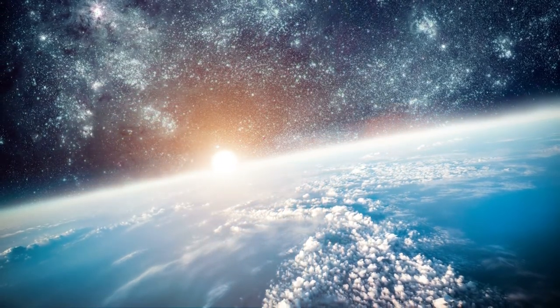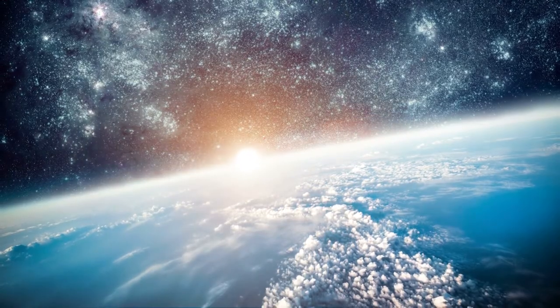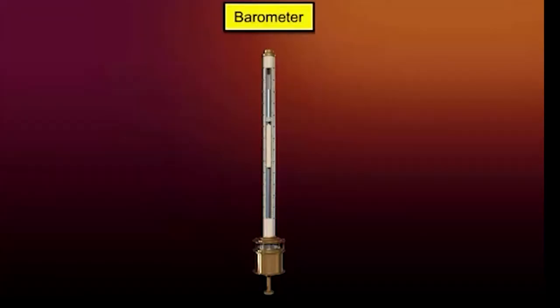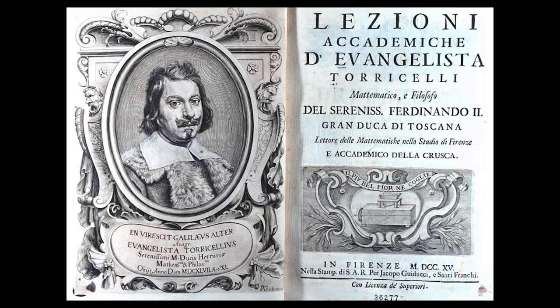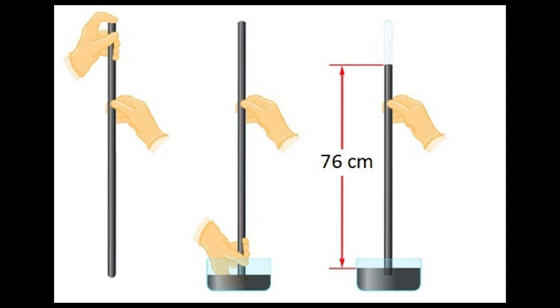So how do you measure the atmosphere's weight? A barometer is a scientific instrument used to measure atmospheric pressure. The most common one, the mercury barometer, is also the oldest type of barometer, invented by the Italian physicist Evangelista Torricelli in 1643.